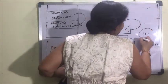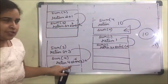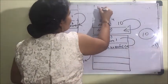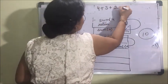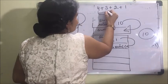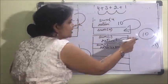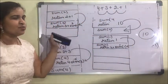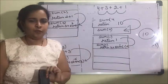So the result will finally be 10. The sum of natural numbers: 4 plus 3 plus 2 plus 1 — 4 plus 3 is 7, plus 2 is 9, plus 1 is 10. This will be the result. This is how a recursive function works.